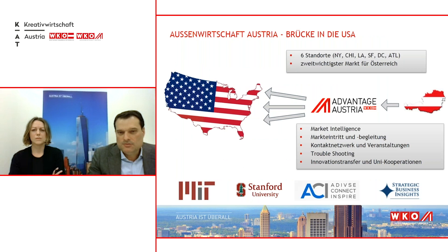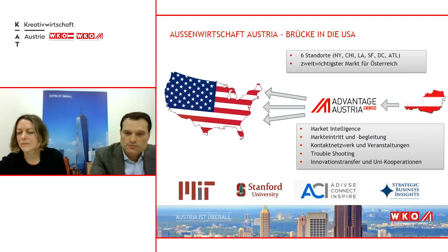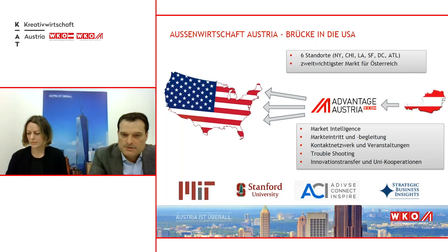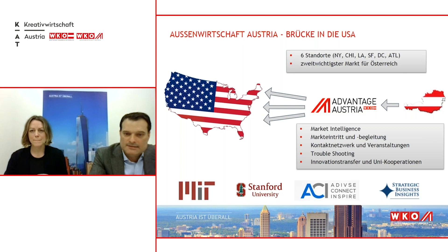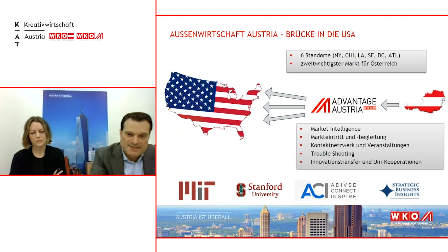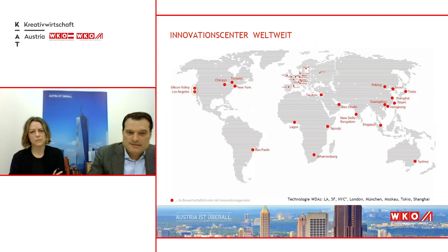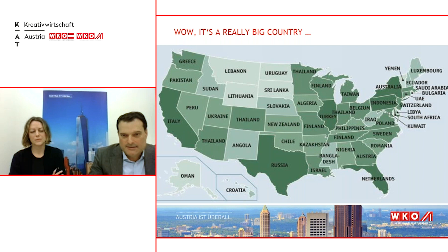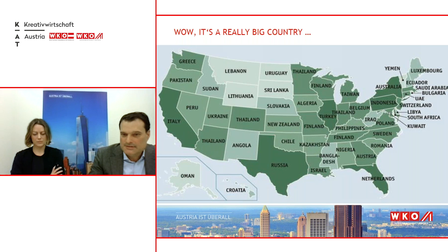Wir, die Außenwirtschaft Austria, sind Ihre Brücke in die USA mit sechs branchenmäßig aufgeteilten Standorten. Wir bereiten Market Intelligence vor, erleichtern den Markteintritt, stellen unser Kontaktnetzwerk zur Verfügung und machen Troubleshooting. Neben unserer Funktion als Exportagentur sind wir auch eine Innovationsagentur und machen gemeinsam mit Universitäten wie MIT und Stanford einen Innovationstransfer nach Österreich. Diese Innovationscenter sind 35 an der Zahl weltweit, aus einem Netzwerk von über 110 Standorten. Allein Kalifornien hat wirtschaftlich die Größe von Italien.